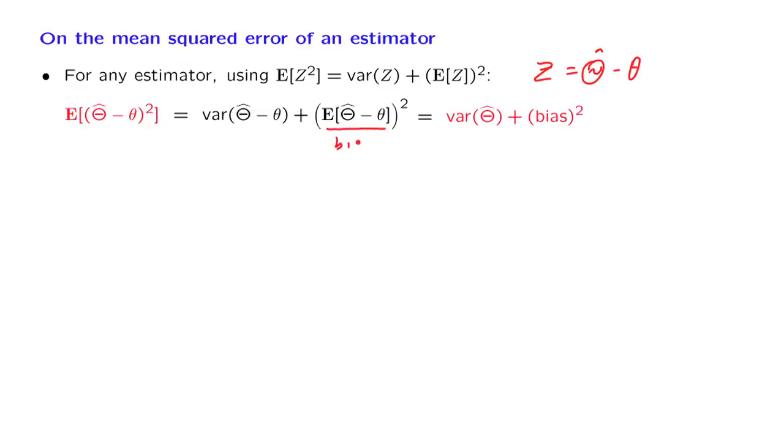This quantity here, we will call it the bias of the estimator. It tells us whether theta hat is systematically above or below the unknown parameter theta that we are trying to estimate. And using this terminology, this term here is just equal to the square of the bias. So the mean squared error consists of two components, and these capture different aspects of an estimator's performance.